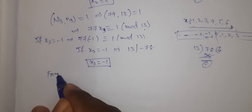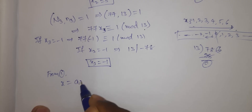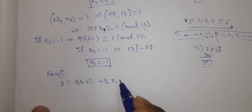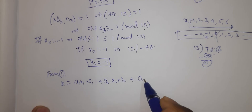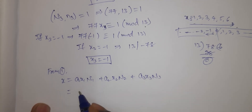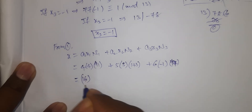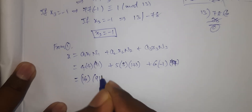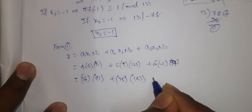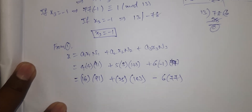From equation 1, x = a1·x1·N1 + a2·x2·N2 + a3·x3·N3. That equals 4·4·91 + 5·5·143 + 6·(-1)·77, which gives 16·91 + 25·143 − 6·77.